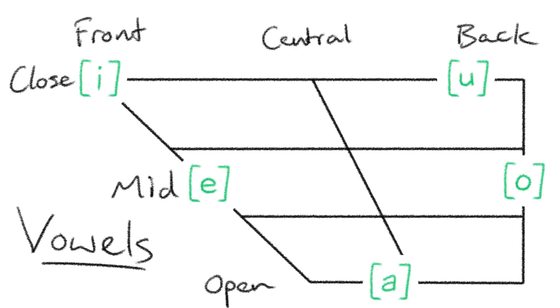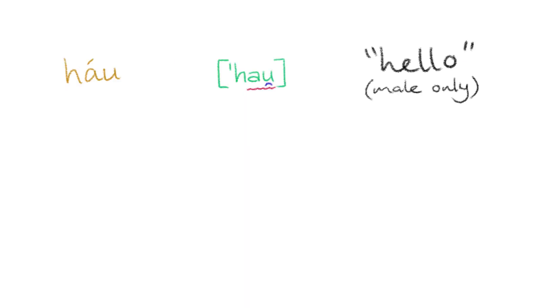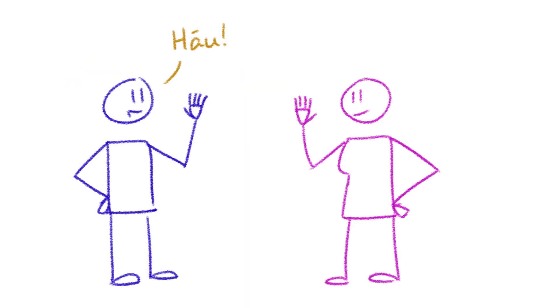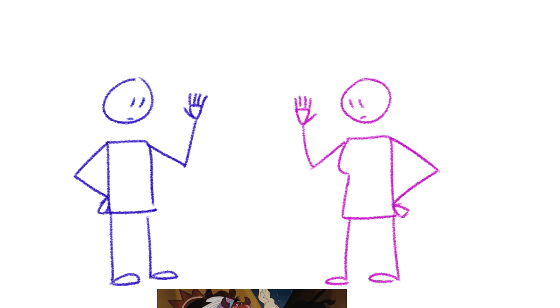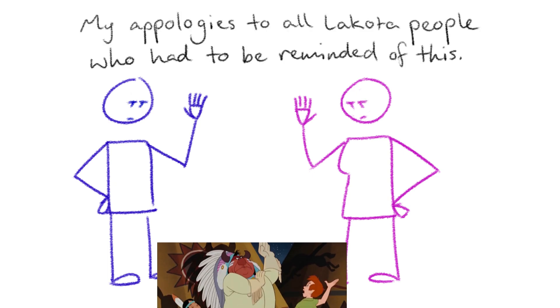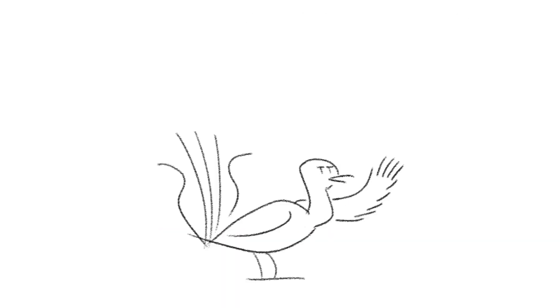Phonetics. Lakota has five oral vowels, three nasal vowels, and no diphthongs, except in the common greeting 'how' — which, yes, is where that stereotypical American Indian greeting comes from, just get over it, moving on.